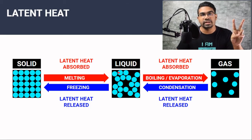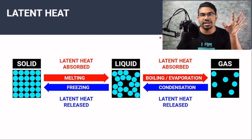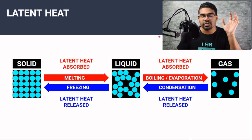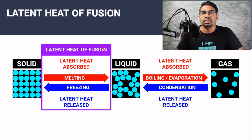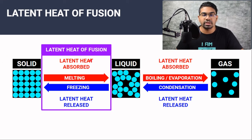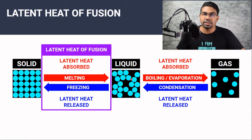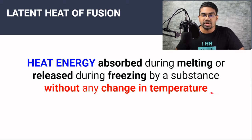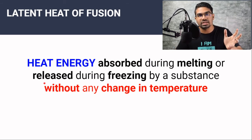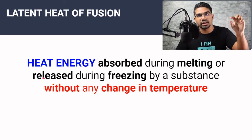There are mainly two types of latent heat: latent heat of fusion and latent heat of vaporization. Which type applies depends on what kind of change of phase is taking place. If we are dealing with a change in phase between solids and liquids — either solid to liquid or liquid to solid — it is called latent heat of fusion. When a solid absorbs latent heat to become liquid, it is absorbing latent heat of fusion. If a liquid releases heat energy to become solid, it is releasing latent heat of fusion. The definition is: heat energy absorbed during melting or released during freezing by a substance without any change in temperature.